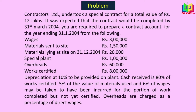The data given includes: wages, materials sent to site, materials lying at site on 31/12 (which is the closing materials, i.e., material in hand), special plant, overheads, work certified, depreciation at 10% to be provided on plant, and cash received is 80% of work certified.